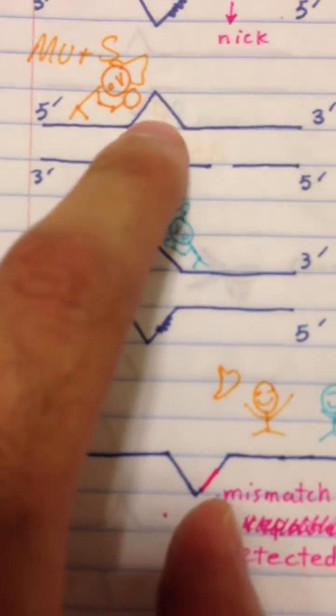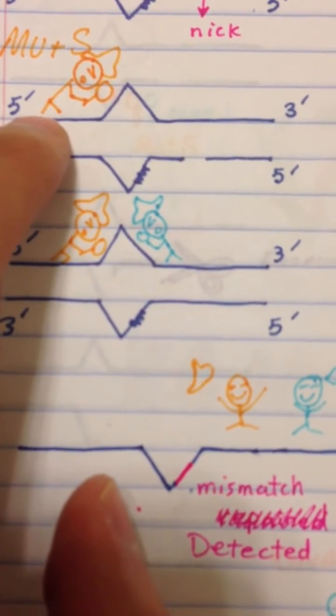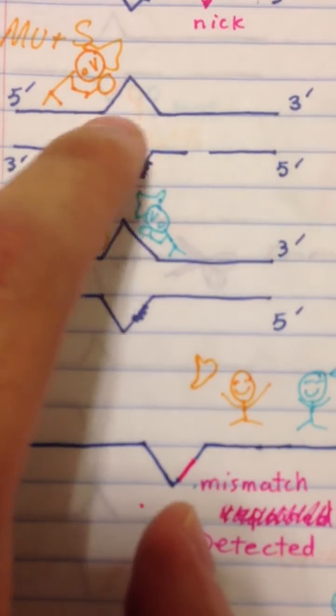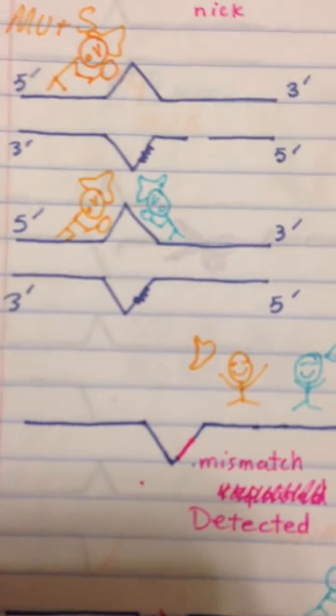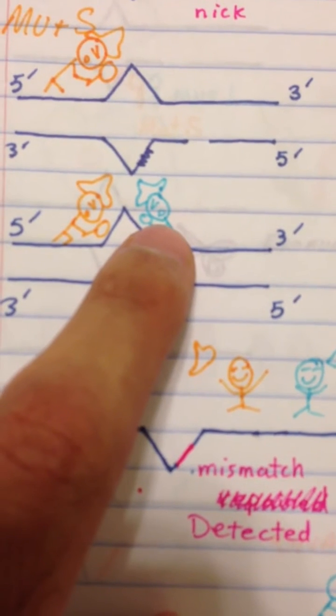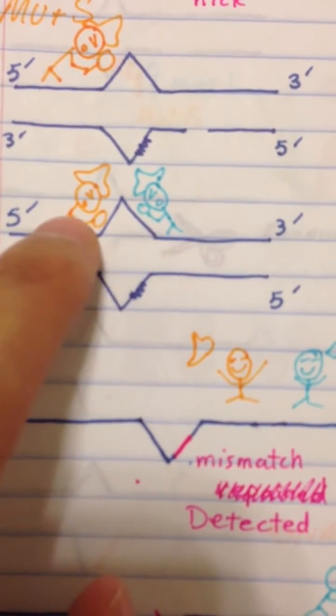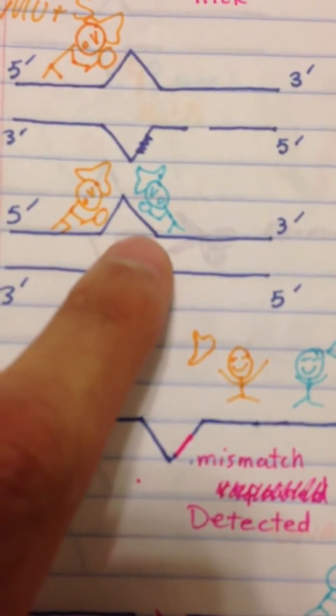You see, imagine this is the new strand of DNA. You see that MutS now is starting to detect the missing parts, and here is the other one, MutL. Now they join together and they're detecting the mistaken part on DNA.